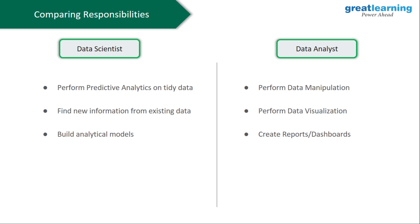A data scientist is mostly concerned about developing analytical models — ML algorithms such as linear regression, logistic regression, decision tree, and random forest. Depending on the problem statement, the data scientist has to build these ML algorithms. Once built, he verifies if the result is accurate enough, then goes back and tweaks the hyperparameters of the model to get the best accuracy possible.